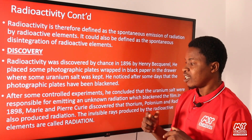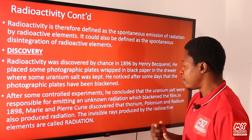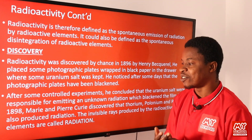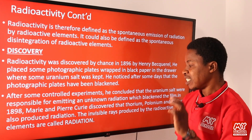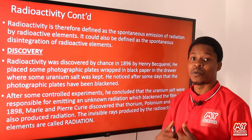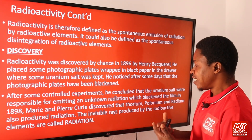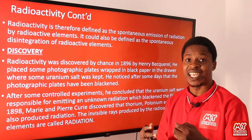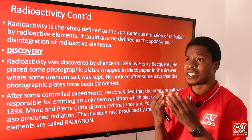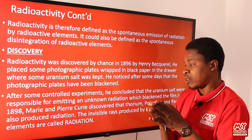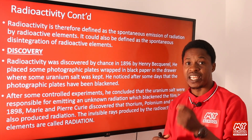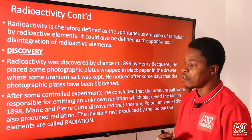In 1898, Marie and Pierre Curie discovered that thorium, polonium, and radium also produced radiation. Based on these findings, the invisible rays produced by radioactive elements are what we call radiation — they cannot be seen physically, but their effects can be detected.